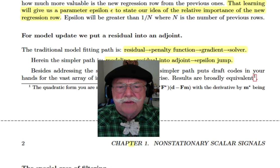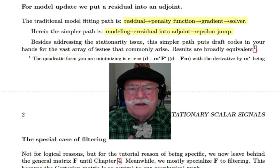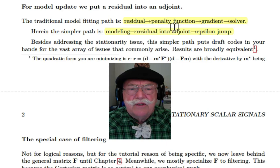We're going to use that to update our solution, and we're going to learn from practice just how far to update the solution. The methodology will be really different from the classical technology. Classically, you have a residual, you put it into a penalty function, and then you find a gradient, and then you ask a solver, a conjugate gradient or something like steepest descent, to find you the solution.